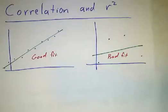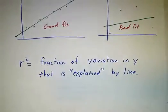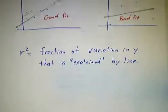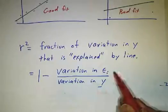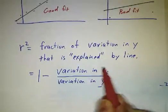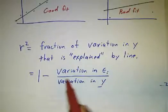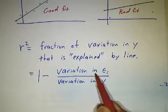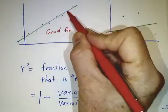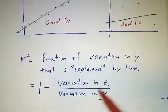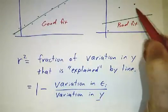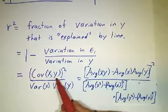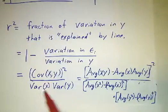We come up with a number called r², which is the fraction of the variation in y that is explained by the line. More precisely, the variance of the errors ε divided by the variance of y gives 1 − r². So when r² is large, the errors are small relative to the variation in y; when r² is small, the errors are large relative to y. The formula for r² is the covariance of x and y, squared, divided by the variance of x times the variance of y.